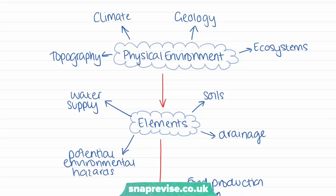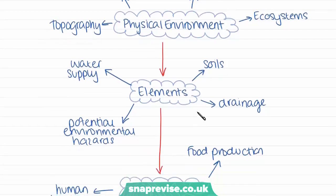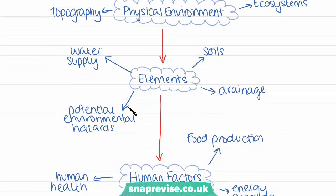Starting with features of the physical environment, these are things like topography — the shape of the land — the climate, geology which is the rock underneath the land, and ecosystems. These factors all come together to determine things like the water supply, potential environmental hazards, soils, and the drainage of the land.